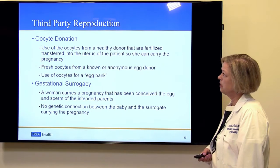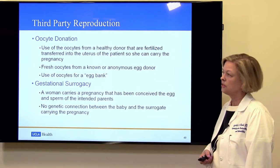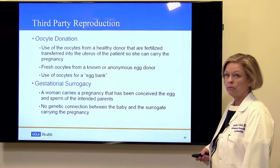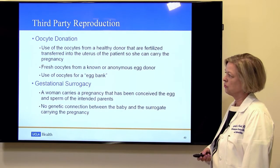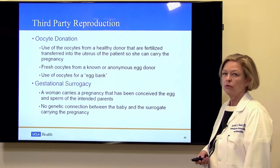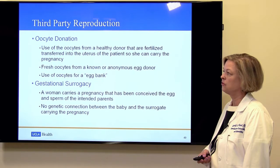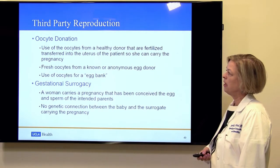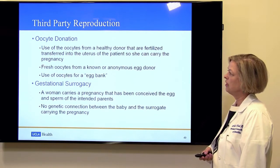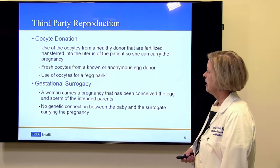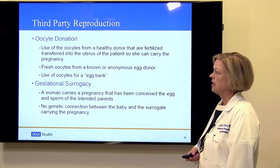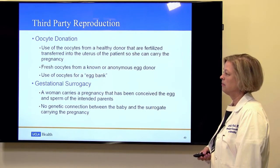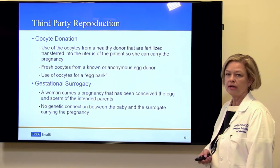Third-party reproduction is the next topic I'd like to talk about. That includes egg donation, sperm donation, and gestational surrogacy. Women who for one reason or another can't use their own eggs can use eggs or oocytes from healthy donors that are fertilized and transferred into the uterus so she can carry the pregnancy. These can either be fresh or frozen, and they can come from either a known or an anonymous donor.